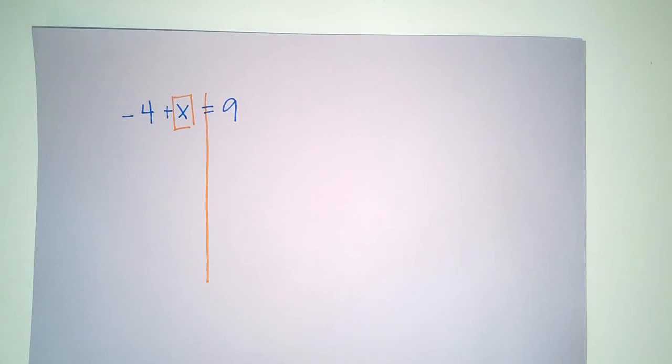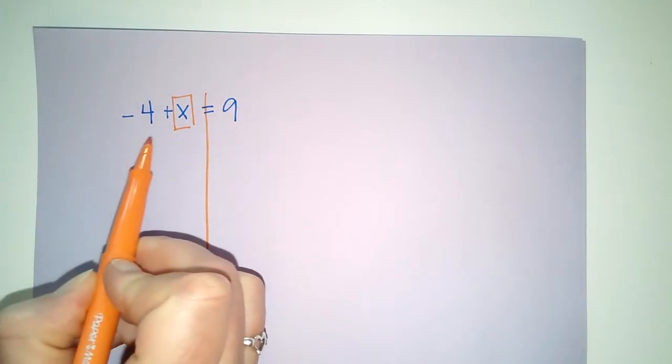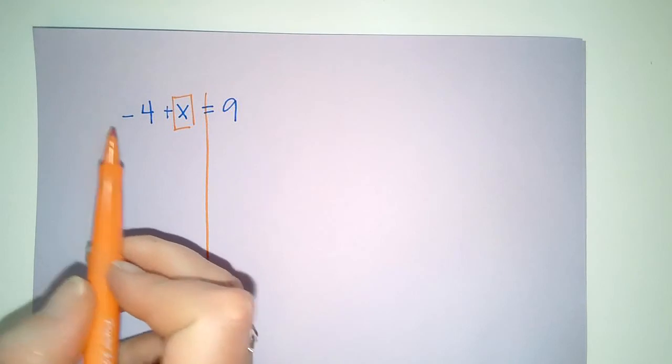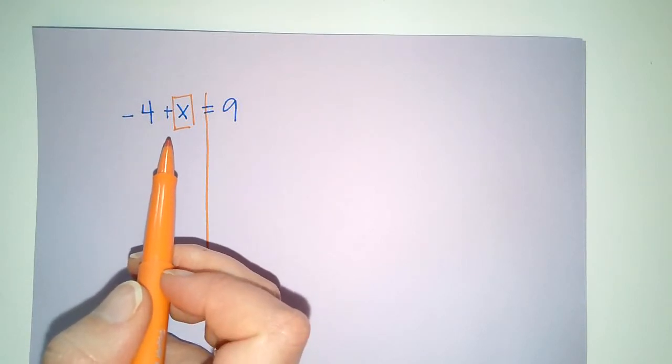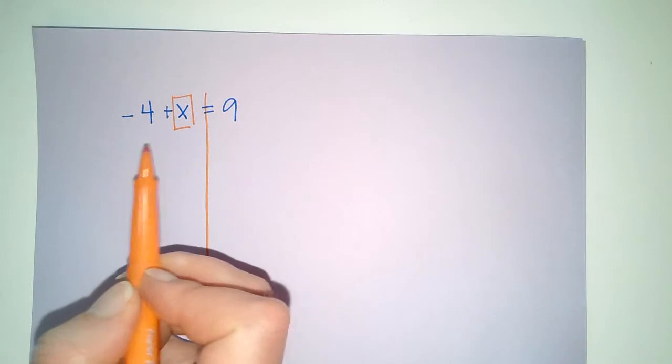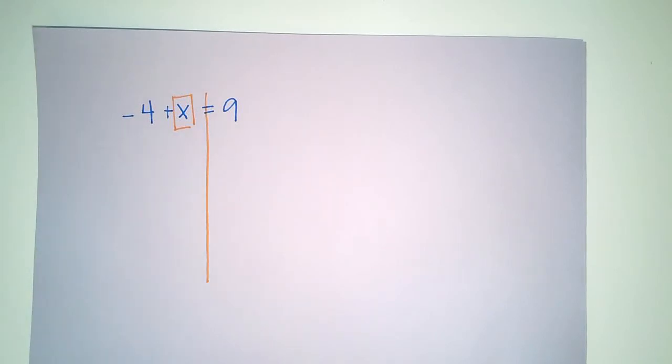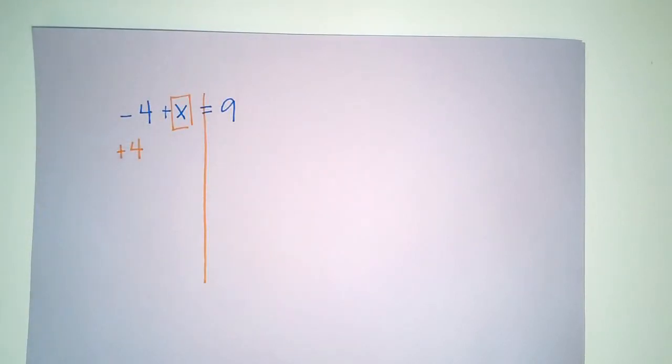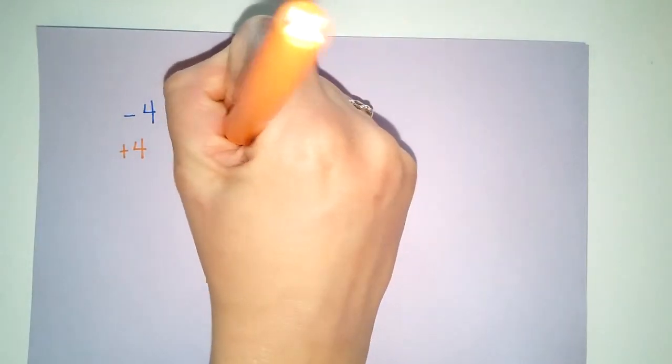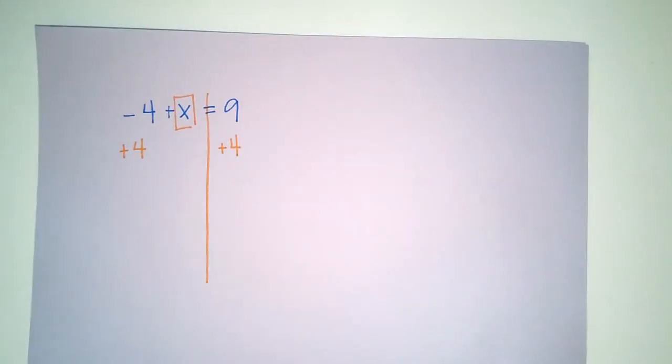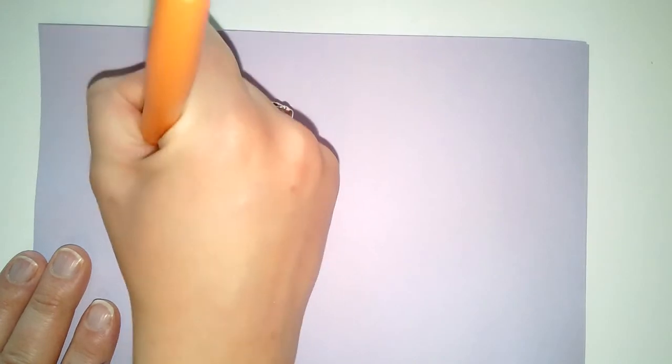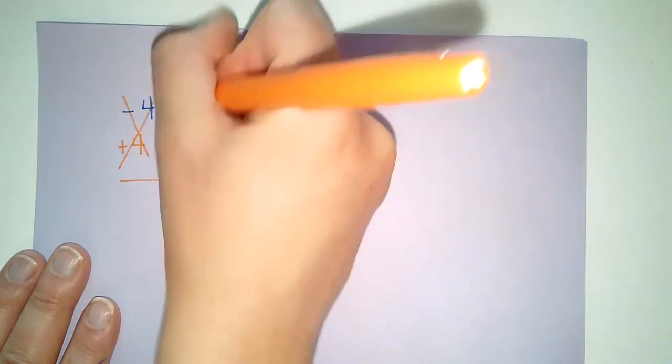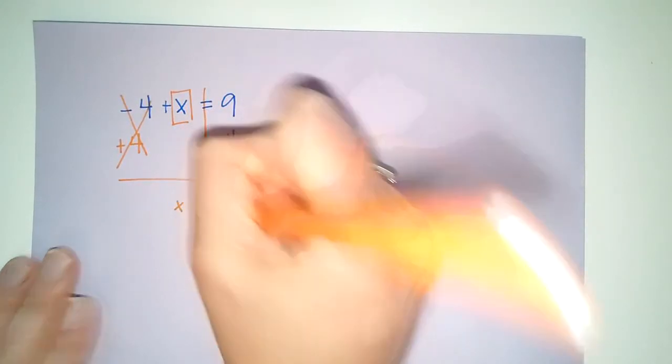Now this one's a little tricky. What do I have here? I have -4. So how do I inverse that? How do I get -4 to zero? Well, I add 4. Because I add 4 on this side, I also need to add 4 on this side. My -4 and +4 cancel out. And I'm left with x=9+4=13.